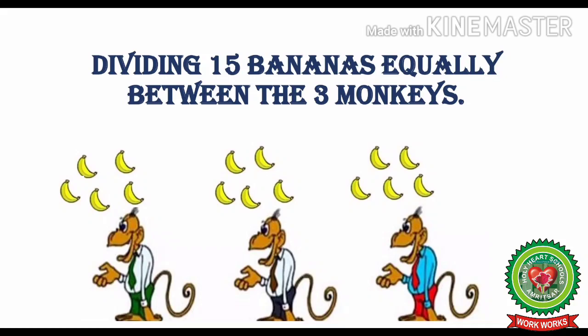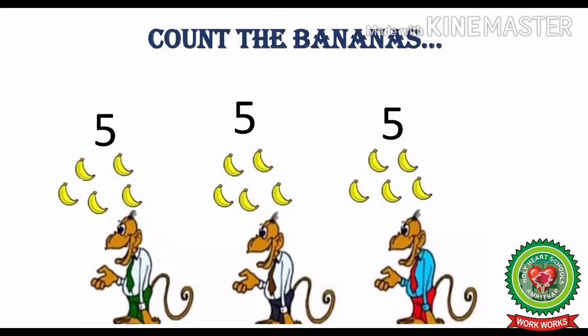So we have divided 15 bananas equally. Now let us count how many bananas did each monkey get. The first monkey got 1, 2, 3, 4, 5 bananas.